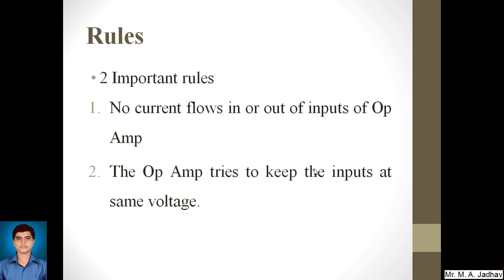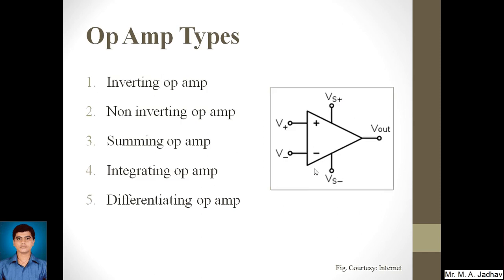Operational amplifiers have two important rules. One: no current flows in or out of the inputs of the op-amp. Two: the op-amp tries to keep the inputs at the same voltage. Keep these two rules in mind. This is the symbol of an ideal operational amplifier — it has two inputs and one output. The power supply lines are VS+ and VS−. The negative terminal is called the inverting terminal, and the positive terminal is called the non-inverting terminal.